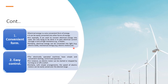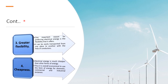Next is easy control. Electrically operated machines have simple and convenient starting, control and operations. For instance, an electric motor can be started or stopped by turning on or off a switch. Similarly, with simple arrangements, the speed of electric motors can be easily varied over the desired range — for example, DC series motor or squirrel cage induction motor.